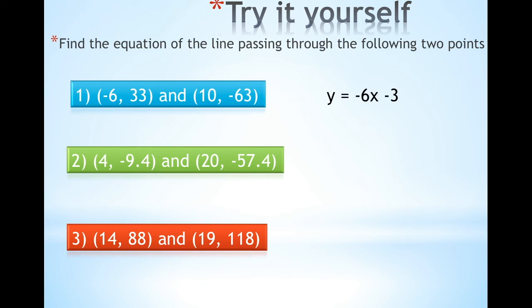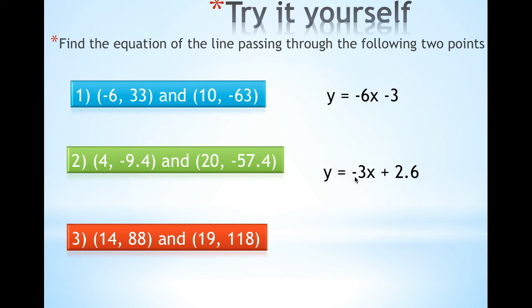In this case you get that your slope is negative 6. When you plug in either (−6, 33) or (10, −63), you would find that your b is actually negative 3. Over here, your slope is negative 3 and your b is 2.6. Putting it together, you get this as your rule.